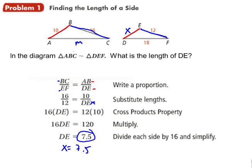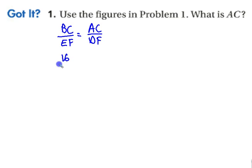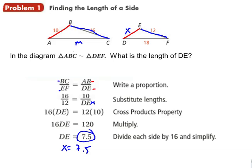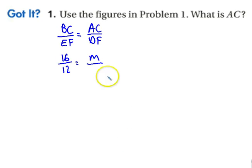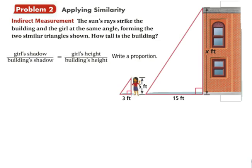That should equal AC over DF. We know that BC and EF are 16 over 12. AC is what we're looking for, and DF is 18. Cross multiply and solve it. I'll let you figure out what the answer is.